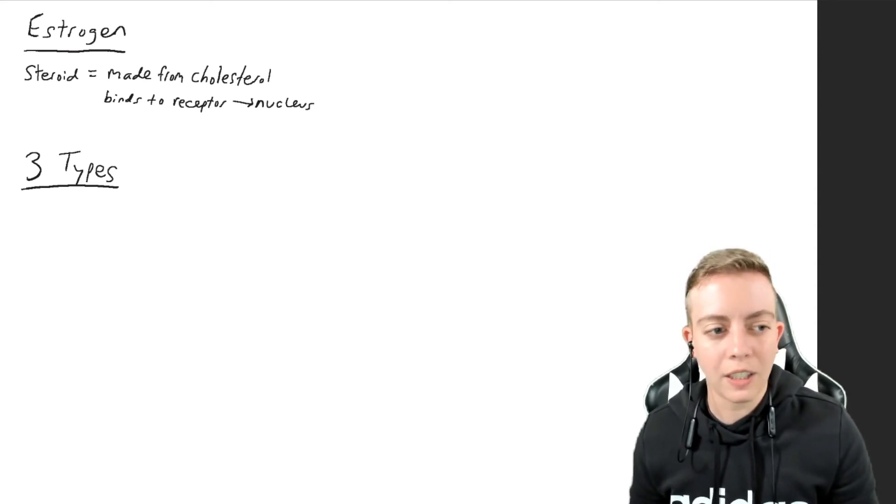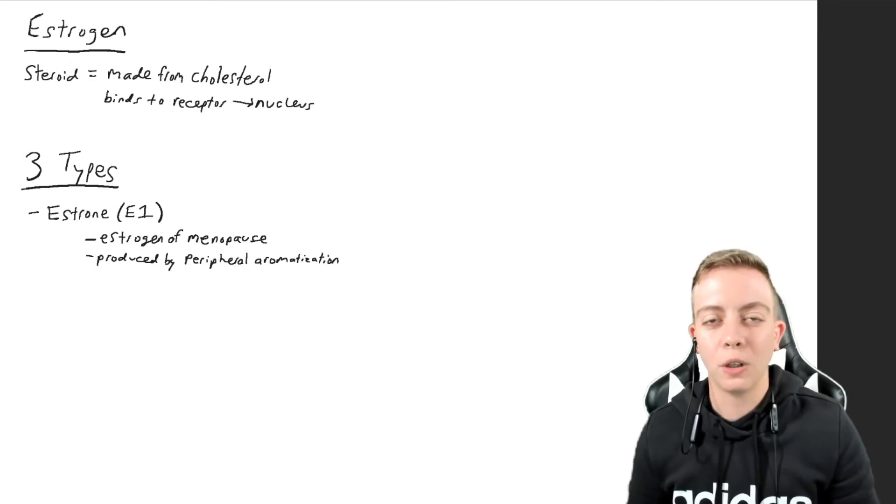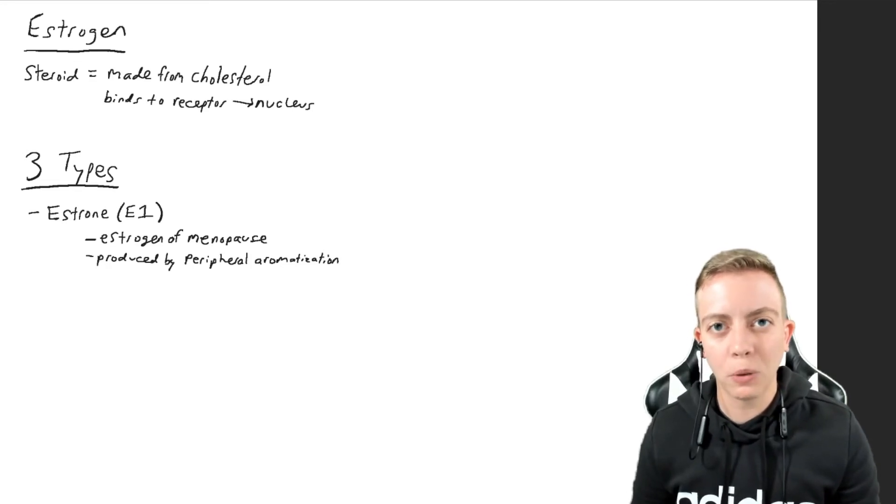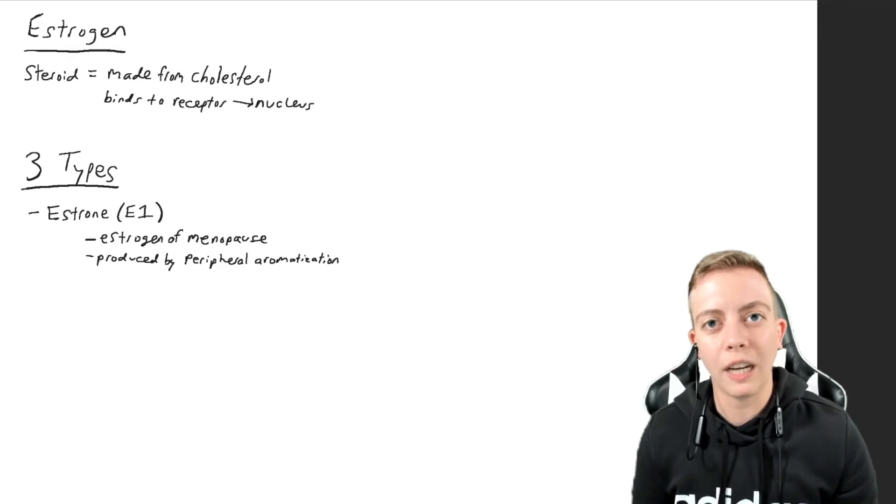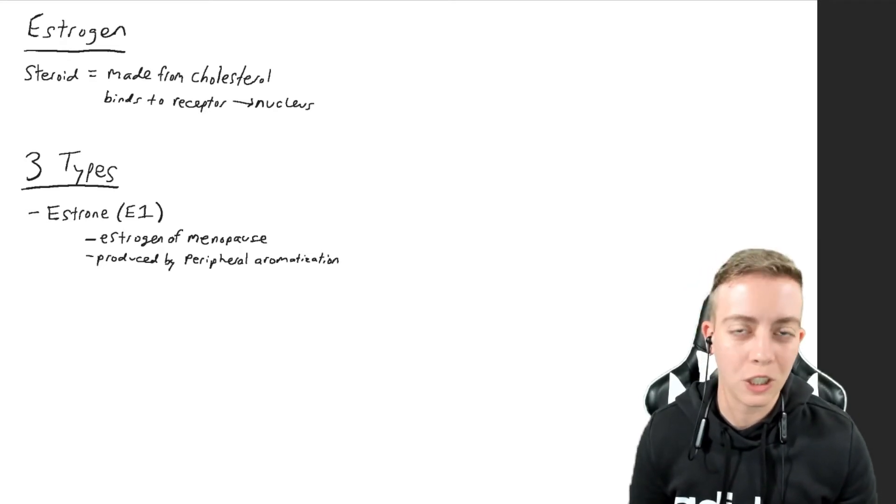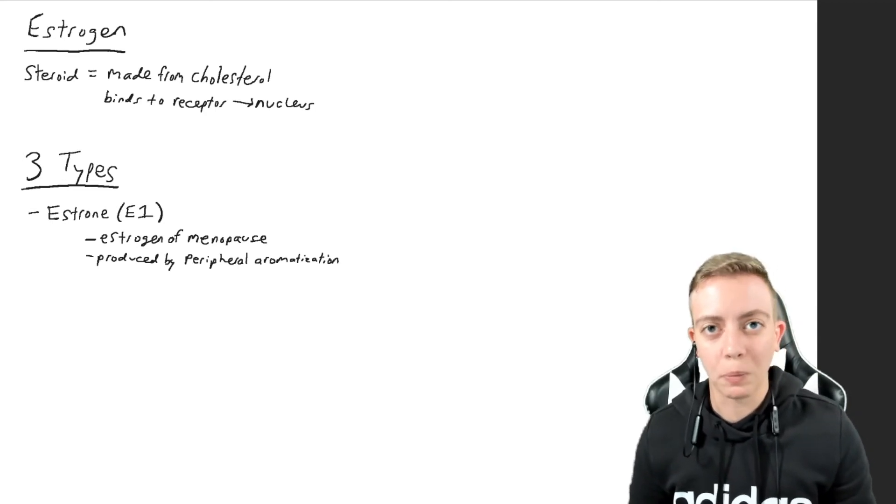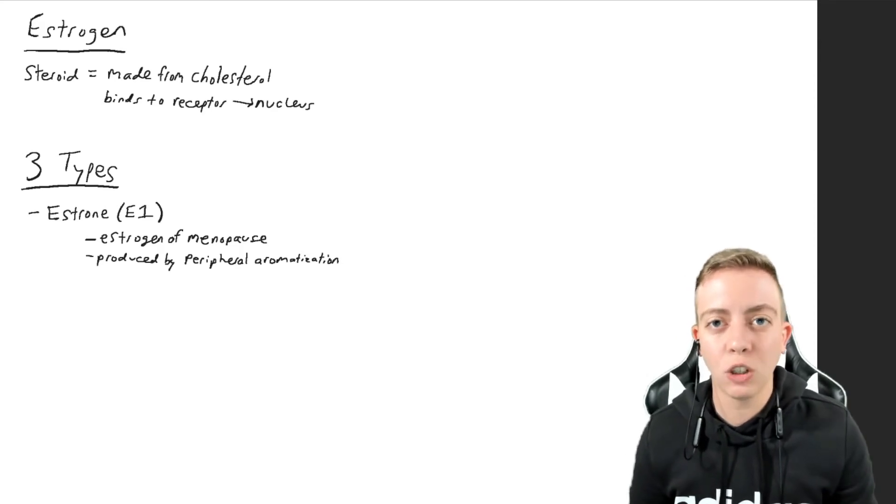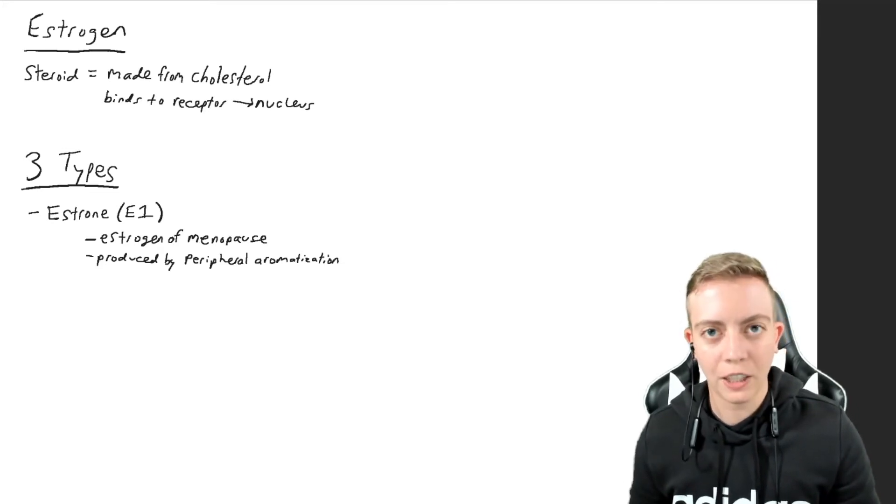The first one on the list is estrone, also known as E1. Estrone is the estrogen of menopause. This is one of the least potent types of estrogen and it is produced by peripheral aromatization. If you recall the enzyme aromatase, this enzyme is found in fat tissue, adipose tissue, and it's found in bone, in the brain, in blood vessels, all over the place. It is responsible for converting androstenedione to estrogen, specifically estrone.